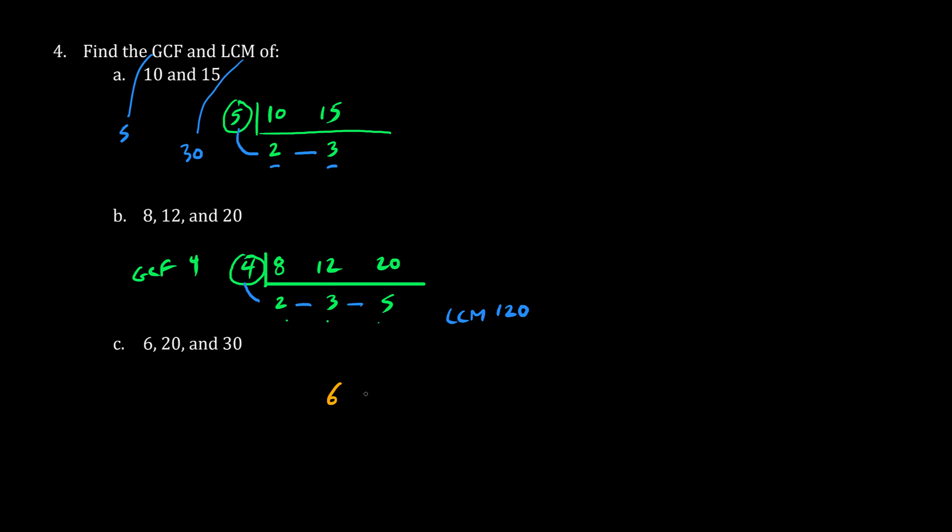Finally, let's try 6, 20, and 30. We draw the L. You can try pulling out a number here. Let's try pulling out 2. 2 times 3 is 6, 2 times 10 is 20, and 2 times 15 is 30.